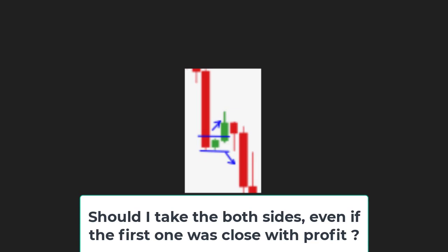Your second question: should you take both sides even if the first one closed with profit? The answer is yes. Put a buy stop and sell stop order at the harami baby candle's high and low. Price hits the buy stop order and goes up — take profit. Then price comes back, hits the sell stop order and presses down — take profit. Why does this trade succeed? Because this is a harami and the mother candlestick is an outside close versus the previous candlestick.